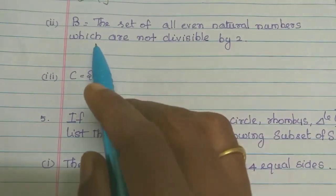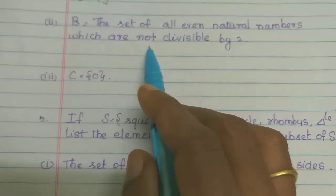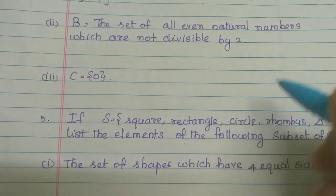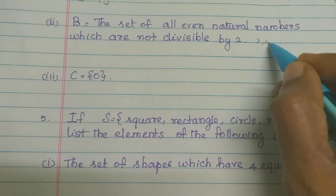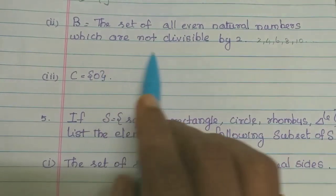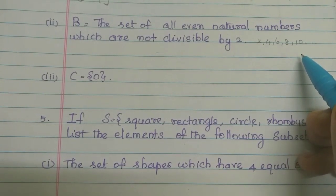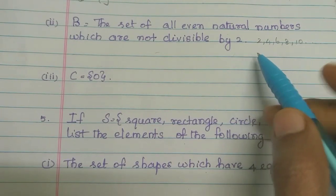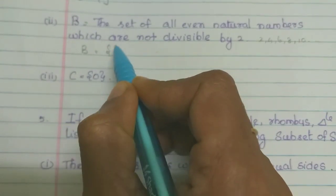Now the 2nd sum: B is equal to the set of all even natural numbers which are not divisible by 2. Even natural numbers are 2, 4, 6, 8, 10, and so on. Since all even numbers are divisible by 2, there are no even numbers that are not divisible by 2. Therefore, B is a Null Set.